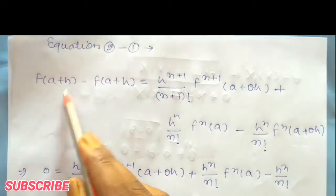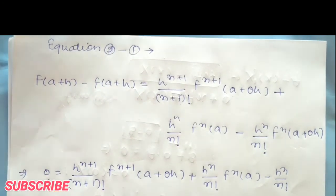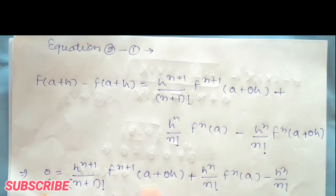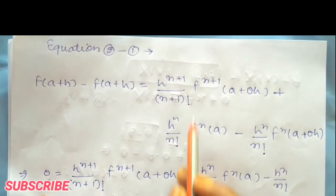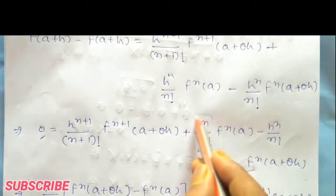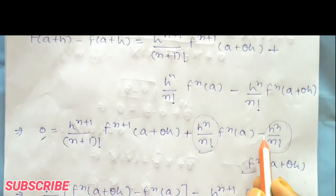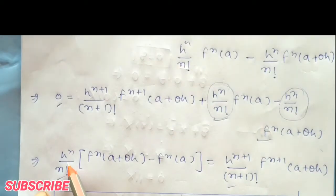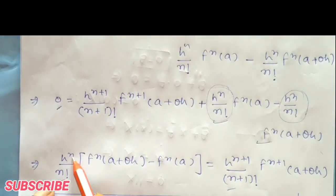After subtracting, the identical terms give 0. The remaining terms on the right side are kept as they are. Now we take the two terms involving f^n and bring them to the left side, taking common factor.